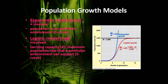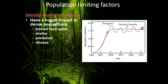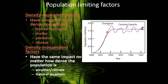Many things determine carrying capacity. A population won't stay exactly even — it will fluctuate around the carrying capacity. There are two different types of factors that cause this: density dependent and density independent. Density dependent factors have a bigger impact on dense populations, such as limited food and water, shelter, predation, and disease. Density independent factors affect all populations the same regardless of density, such as weather, climate, and natural disasters. These are the two ways we reach or determine the carrying capacity that organisms must fluctuate around in their ecosystem.